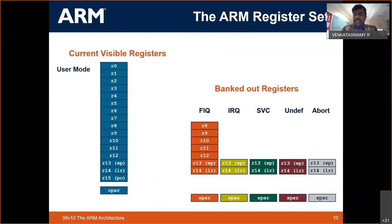In ARM, the general purpose registers are R0 to R15 — unlike 8051 which has registers named A, B, etc. ARM has R0 to R15. There is also the Current Program Status Register (CPSR), equivalent to the Program Status Word (PSW) in 8051. Among the registers, R13 is always the stack pointer, R14 is the link register, and R15 is the program counter.